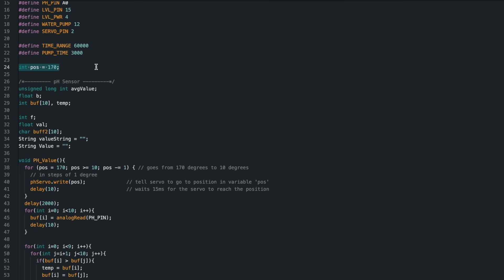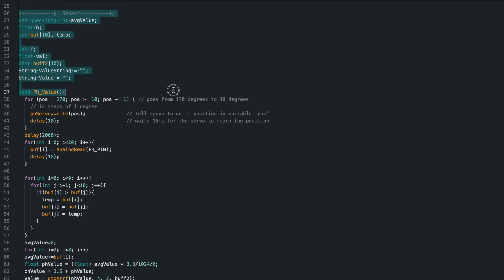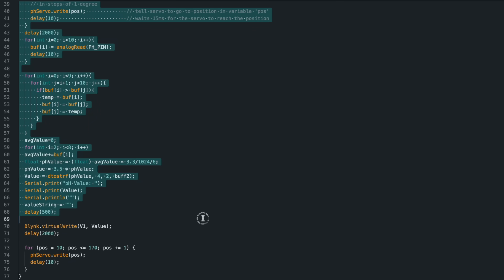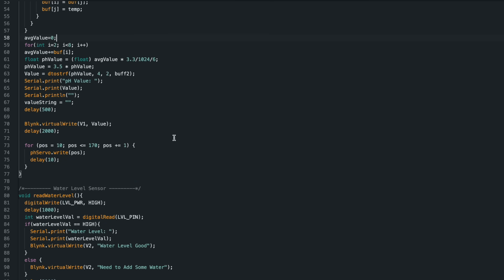If you used a servo motor, define the starting position of the servo. Then, the code block created for the pH sensor was added. We mentioned the analog voltage value, which is the important point here. In addition, the value to be sent to blink was added and servo motor movements were defined.